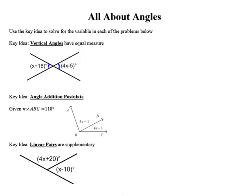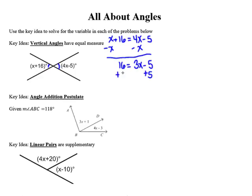To set up this first problem and solve for x, I'm going to take the measure of the first vertical angle, x plus 16, and set that equal to the measure of the second vertical angle, 4x minus 5. I'll start by subtracting x from both sides, then add 5 to both sides to undo the subtraction, and finally divide both sides by 3 to get x equals 7.